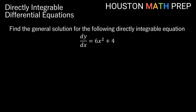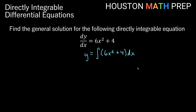Let's look at an easy first example. We want to find the general solution for the directly integrable equation dy/dx equals 6x squared plus 4. Notice the derivative of y is on one side and an expression involving only x is on the other side, so this is directly integrable. That means y is going to equal the antiderivative of 6x squared plus 4 dx — we're taking the antiderivative with respect to x using power rules.